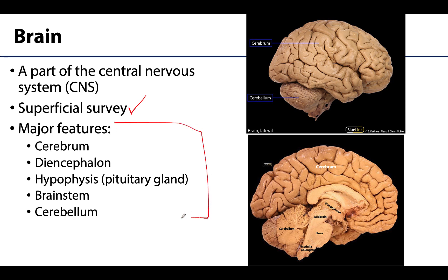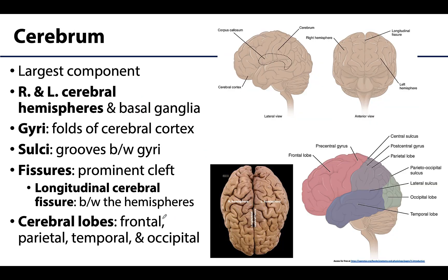These are the major features we are going to discuss. We will start with the cerebrum, as it is the largest and most dominant feature when viewing the brain. Everything outlined here is considered part of the cerebrum. From the lateral view, the anterior view, or the superior view, it is the dominant structure — it is all you can see. Often people incorrectly assume the brain is just the cerebrum, but we know that's not true.